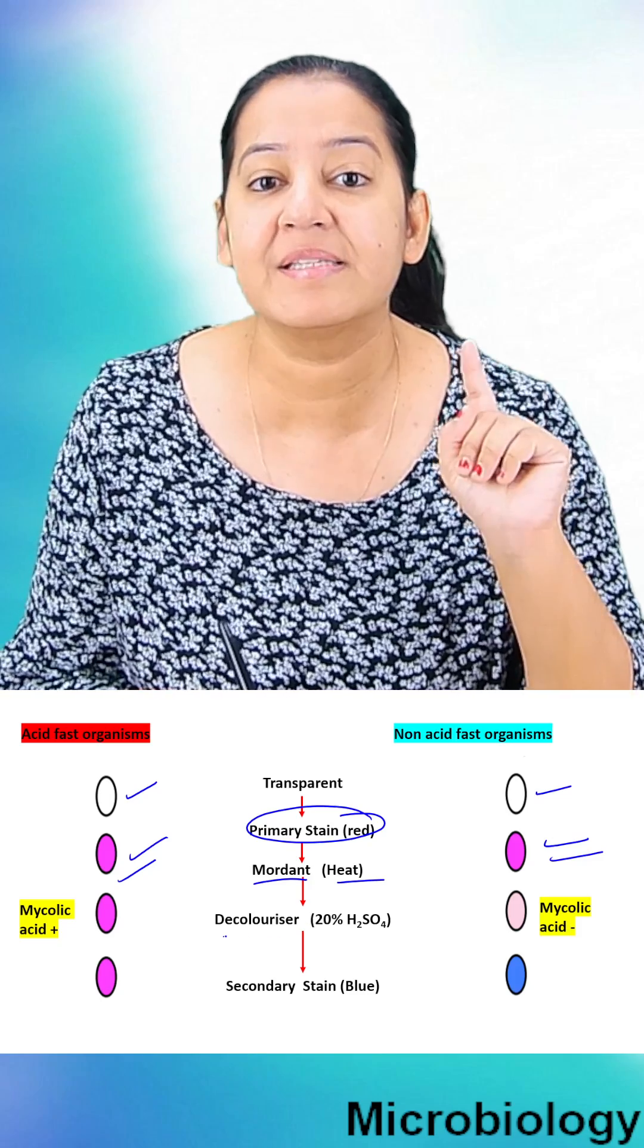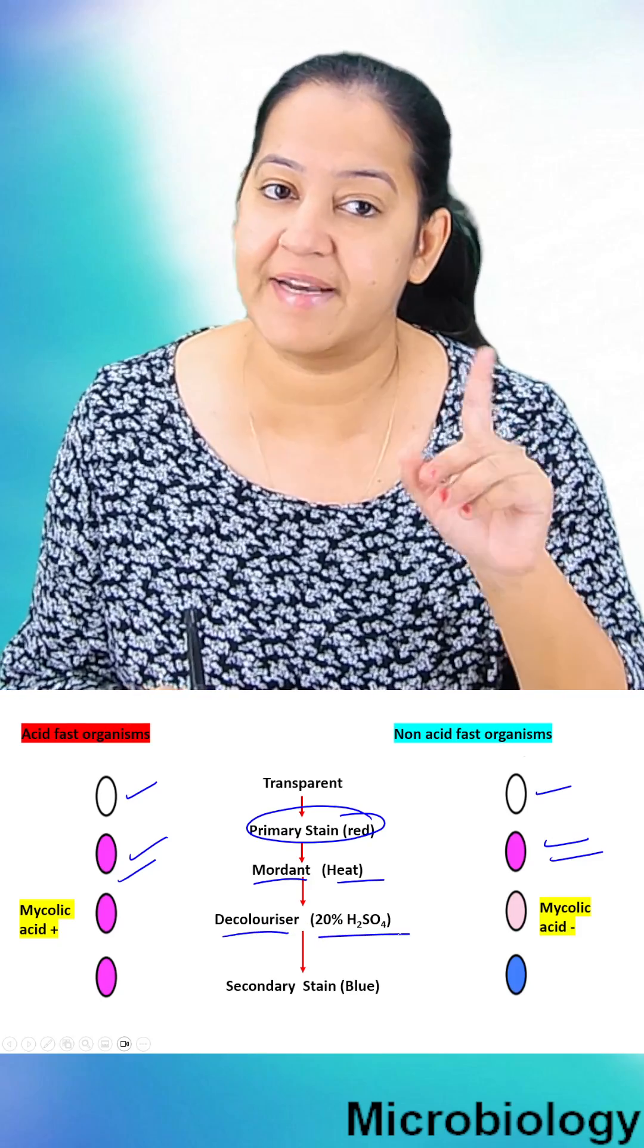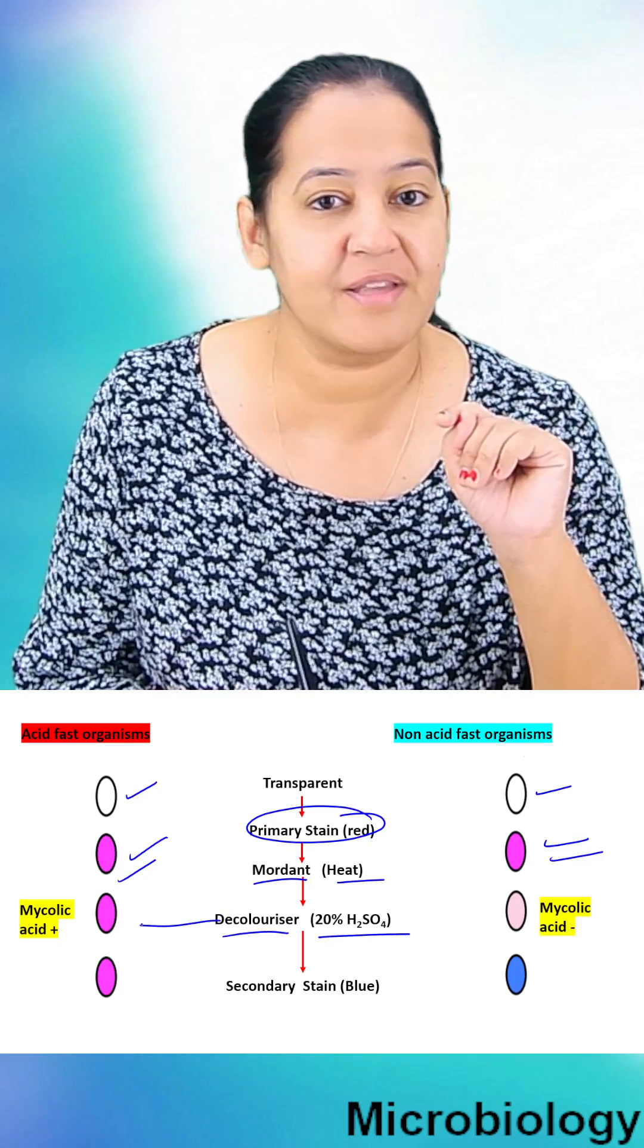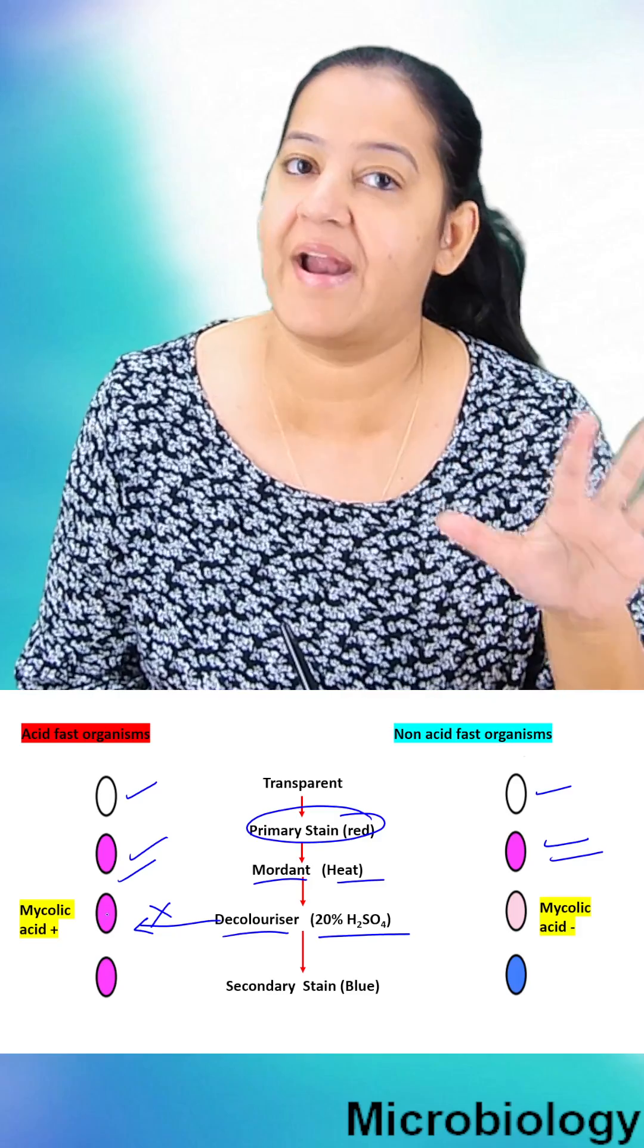Now the third step is main, it is decolorizer. We use 20% sulfuric acid that is H2SO4. Now some bacteria are resistant, they do not get decolorized, they are still red in color.